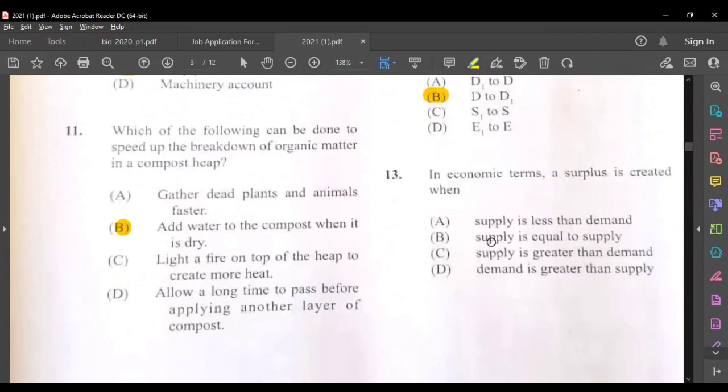Question thirteen, in economic terms a surplus is created when supply is less than demand, supply is equal to demand, definitely not. Supply is greater than demand or demand is greater than supply. The answer here would be C. We're supplying more, we're creating more than what is demanded, so we have a surplus.